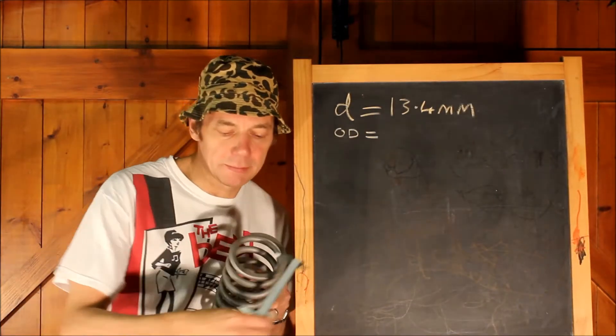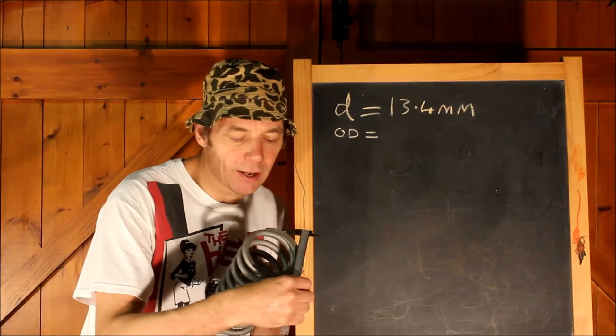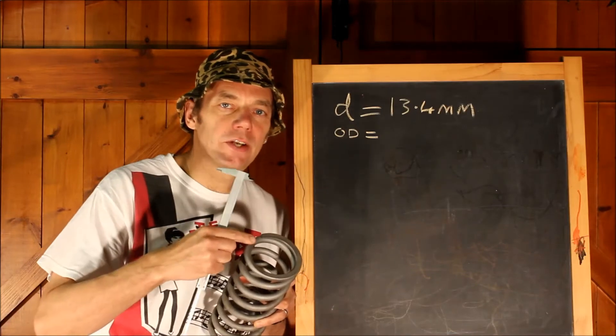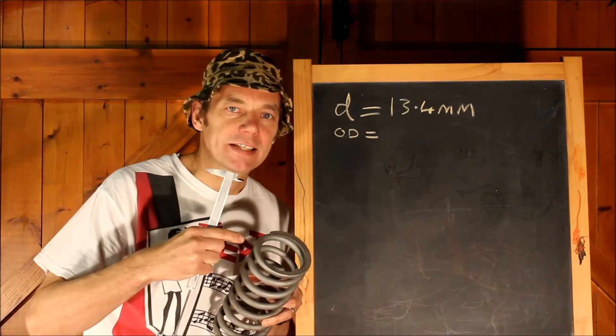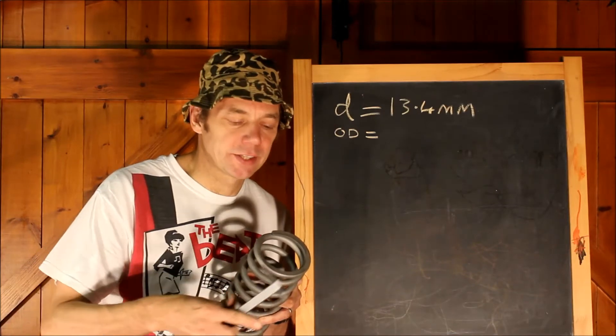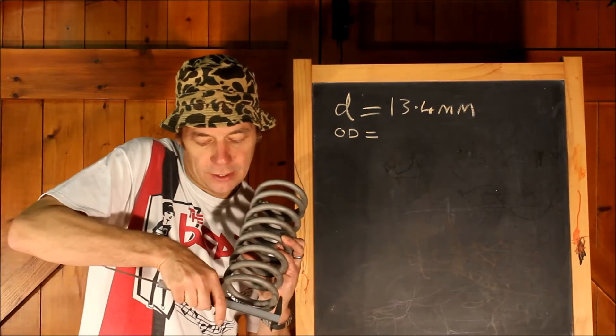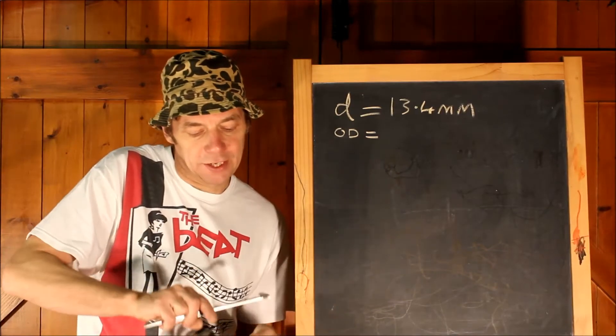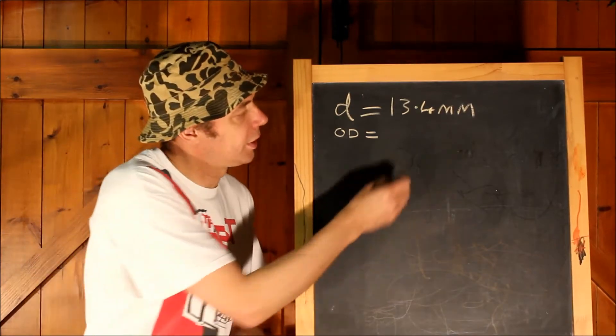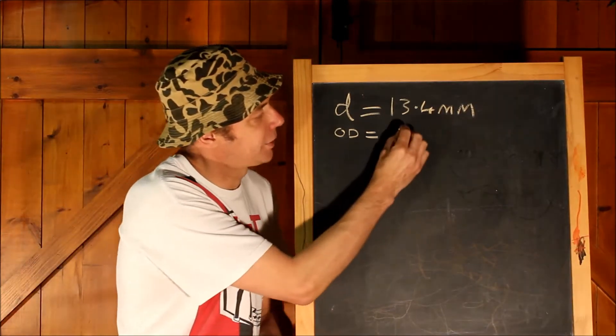The second measurement that you need to make is the outside diameter of the coils. Now springs are usually wound around a mandrel, which means that they tend to taper towards one end, so make a few measurements on each end and take an average of those. The average of this coil is 111 millimeters, so record that as outside diameter.